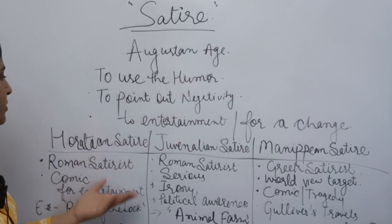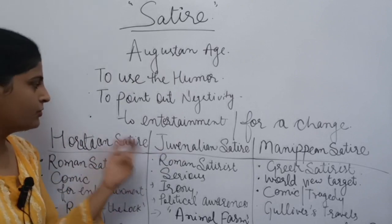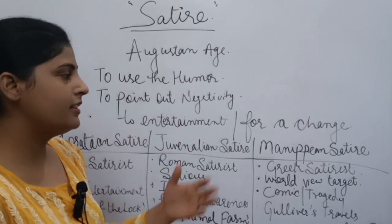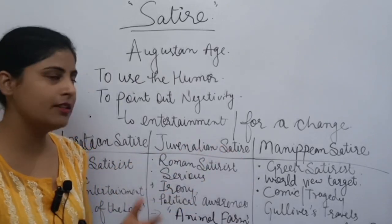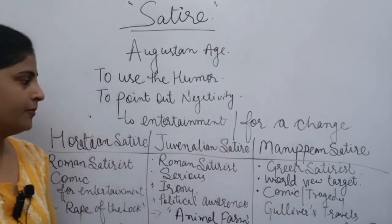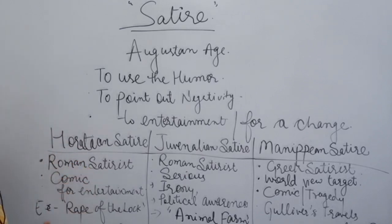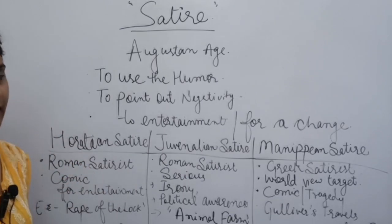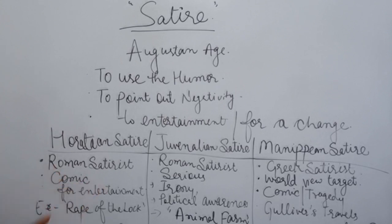The first type is Horatian satire, the second is Juvenalian satire, and the third is Menippean satire. Horatian satire is a Roman satire — its name came from the Roman poet Horace. This satire is just for the sake of entertainment.